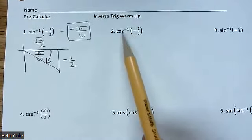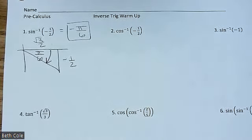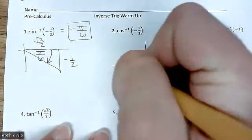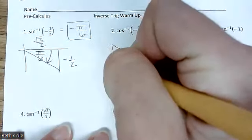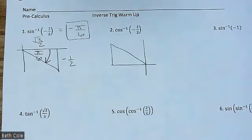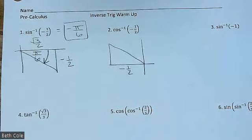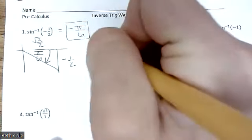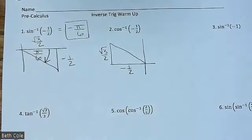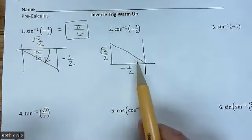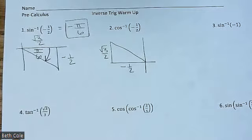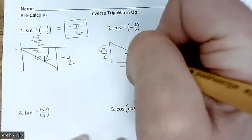Let's try this one. It's cosine inverse and it's negative, so it can't be quadrant one. The other option is quadrant two. So draw your triangle in quadrant two. Now, cosine is the x value, so your negative one half goes along the x axis. That means the other side is square root of three over two. And your angle across from square root of three over two is pi over three.